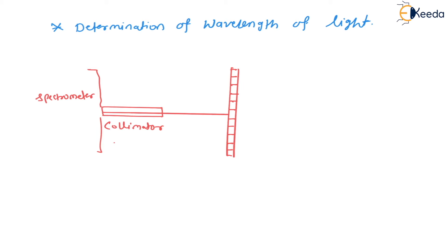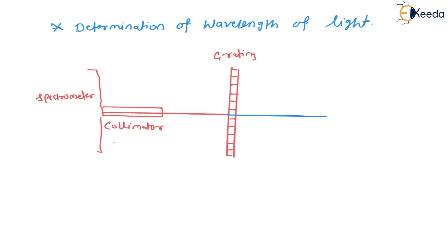The grating is placed on the prism table and adjusted so that the light is normal to the grating. The straight line normal to the grating gives us the central maxima. This line will give you the central maxima.